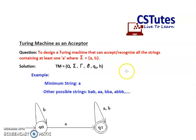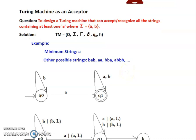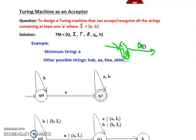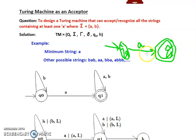To generate the DFA, we start with state Q0. On reading an A, we move to state Q1, which is the final state, because we have now accepted a single A in the string. This is the minimum DFA possible.